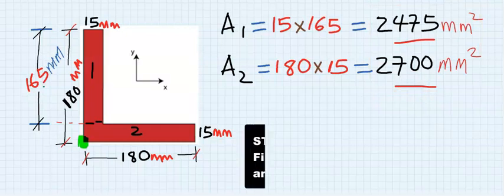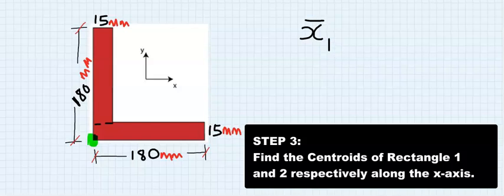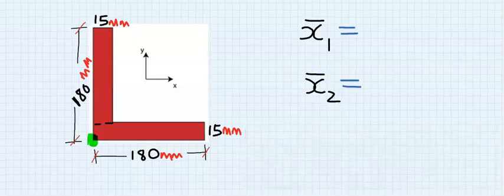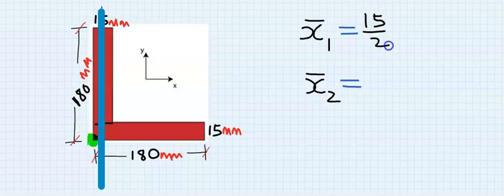Step number 3: Find the centroid of the first rectangle along the X axis and the centroid of the second rectangle along the X axis. For the first rectangle, considering the X axis, we split it along the X axis, we split it along this path and it's going to be 15 divided by 2. Likewise,